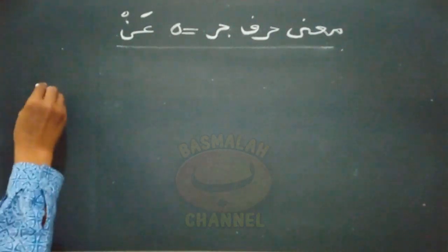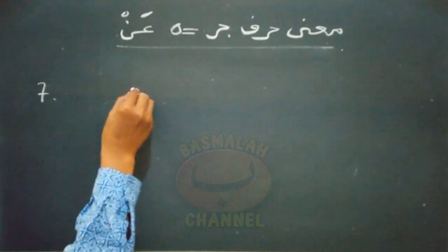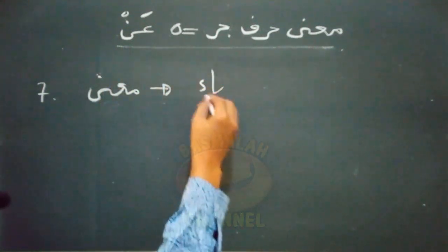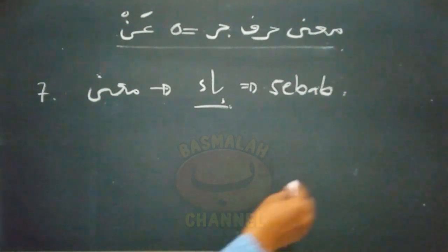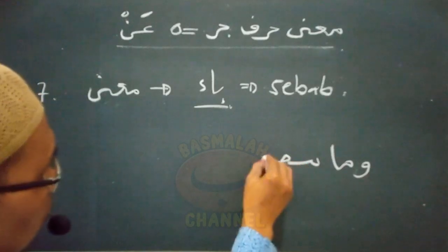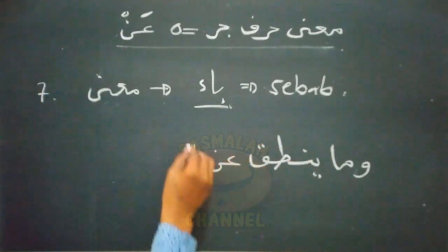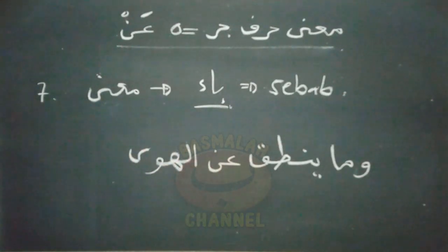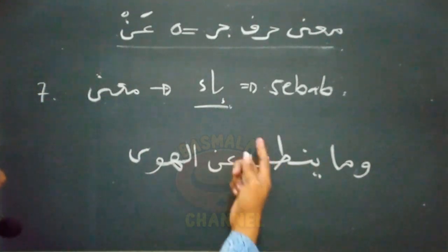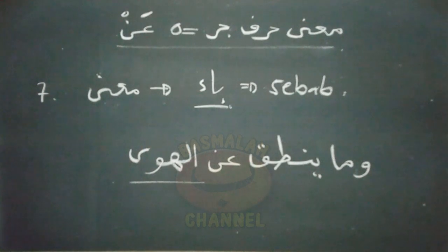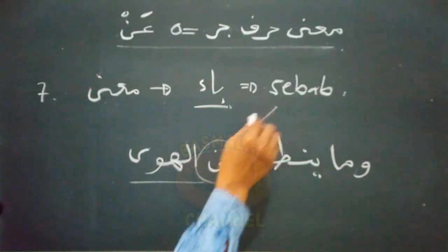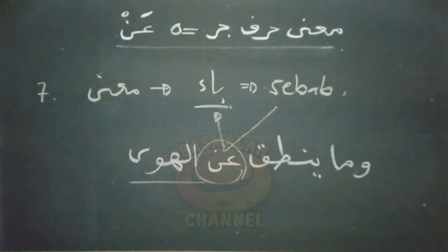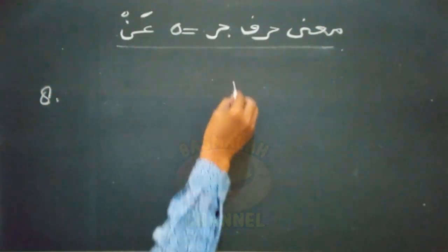Makna yang ketujuh adalah bermakna yang sama dengan huruf jer ba, yaitu bermakna sebab. Contohnya seperti lafad 'wa ma yantiqu anil hawa, in huwa illa wahyun yuha', artinya Nabi Muhammad tidak berbicara sebab hawa nafsunya, melainkan beliau berkata atas dasar wahyu. An dalam susunan ini mengandung makna sebab, dimana maknanya sama dengan makna dari huruf jer ba.